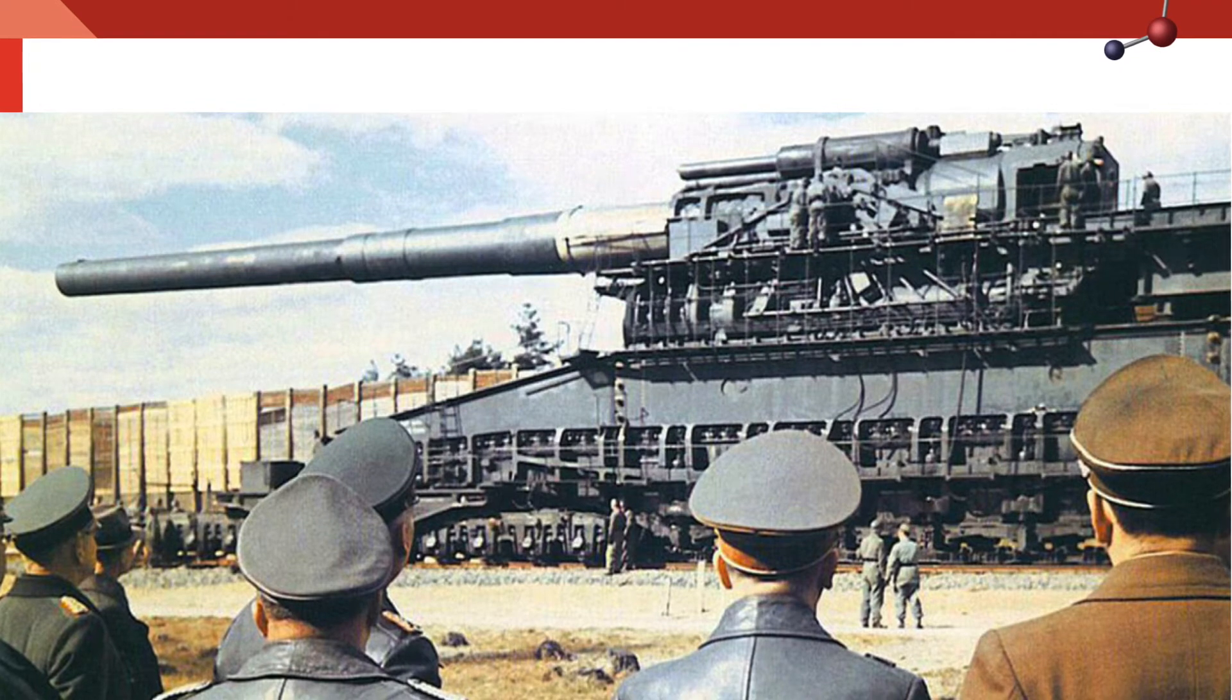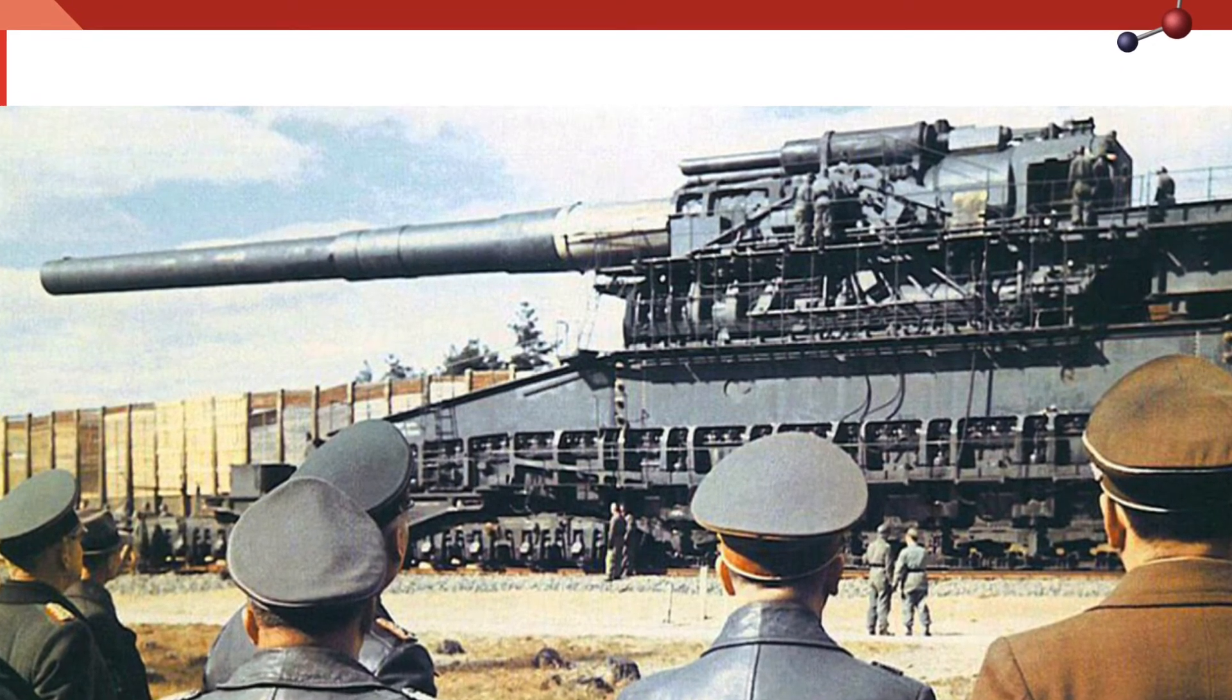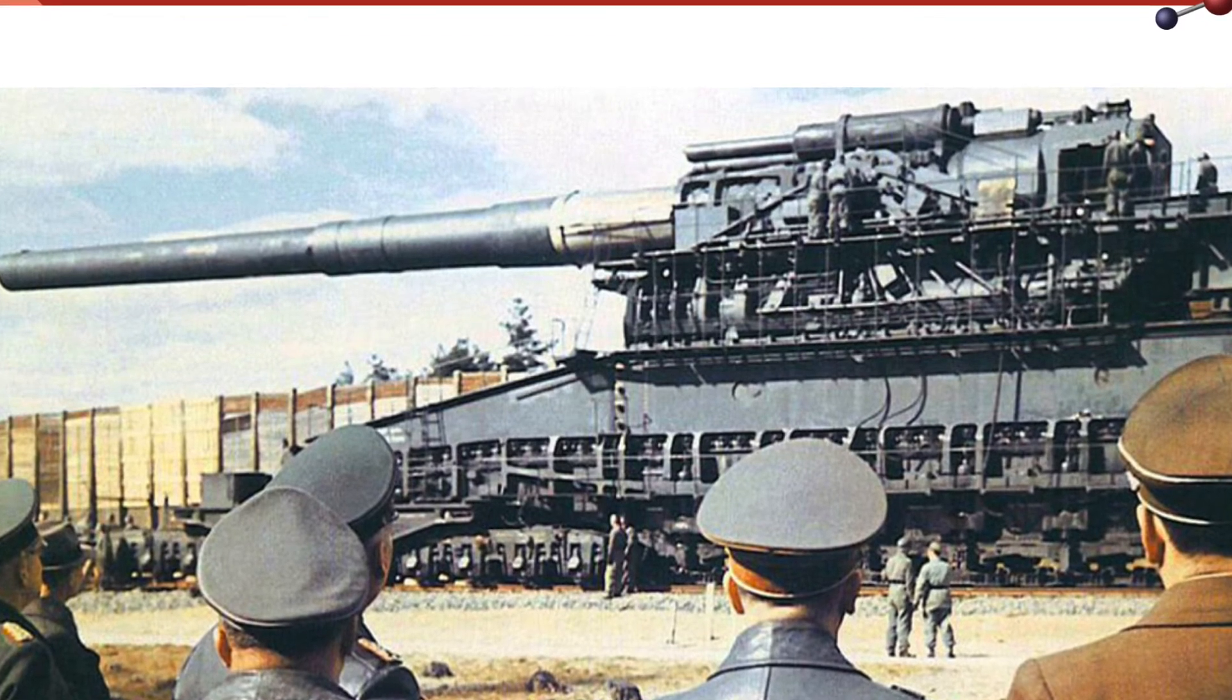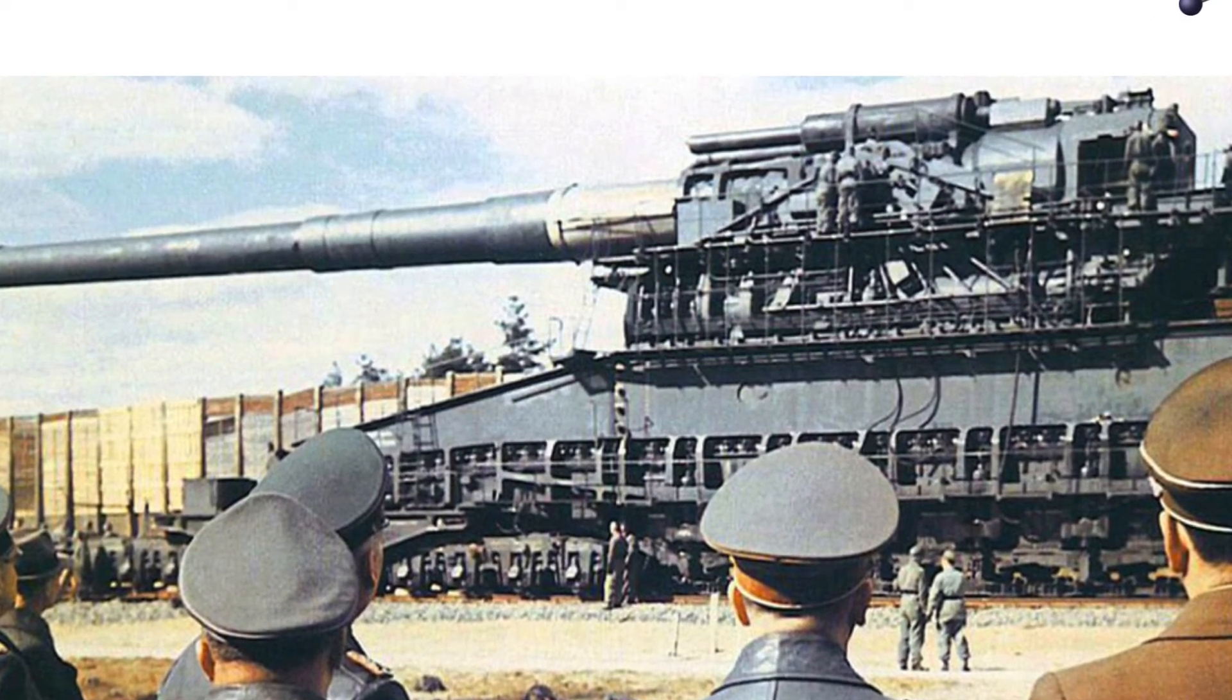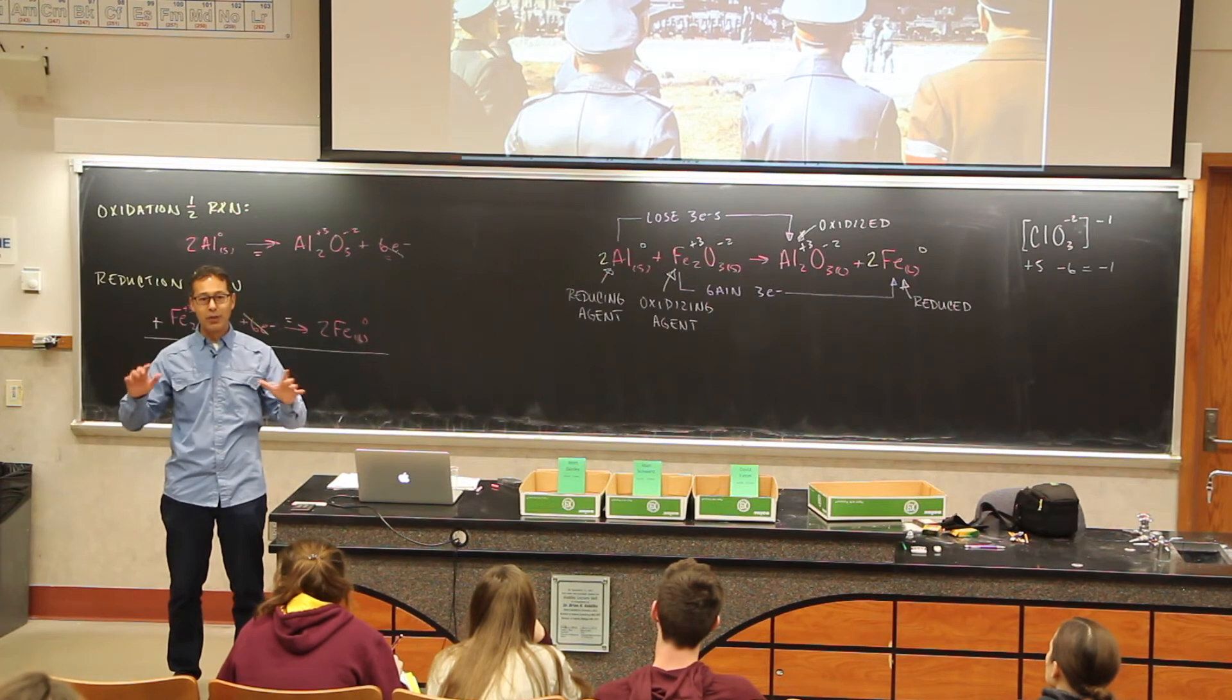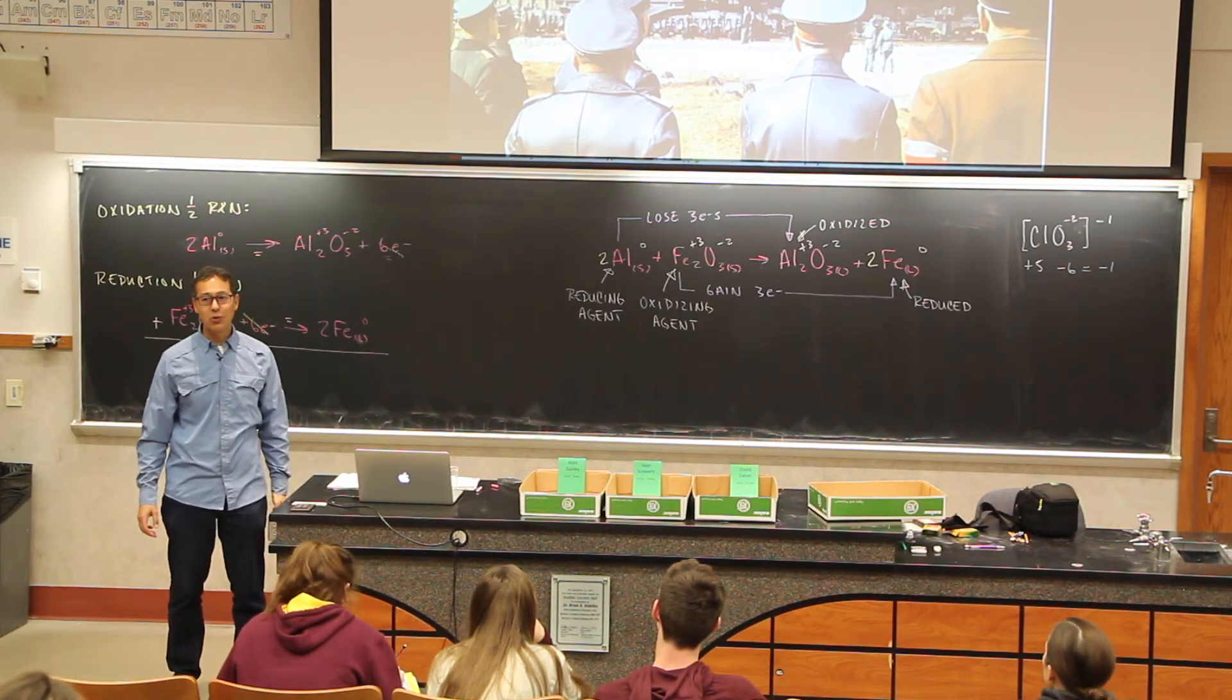The Gustav gun was an artillery piece in World War II that the Germans developed, and it scared the bejesusers out of the Allies. I don't know if you can see, there's actually a person standing on the gun way up there. And a seven-ton shell, this is the mass of a semi-truck, unloaded, but the mass of a semi-truck, and it could shoot it accurately 23 miles.